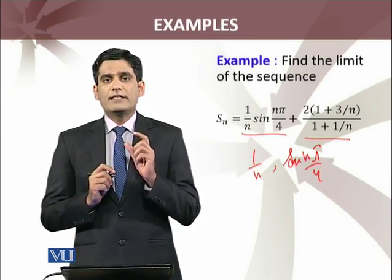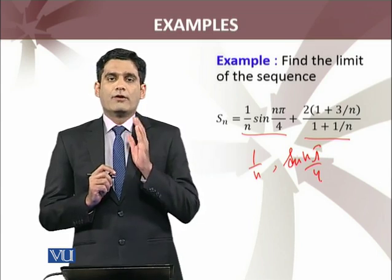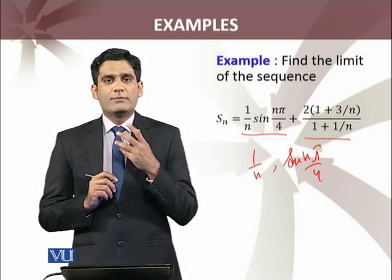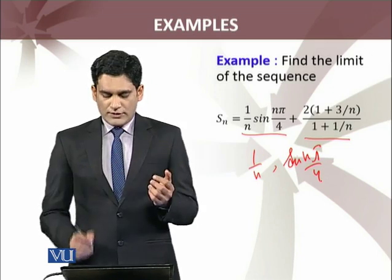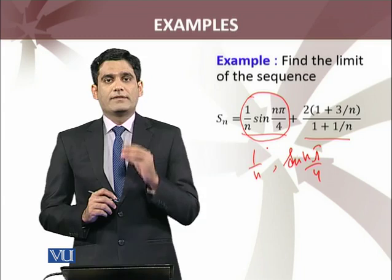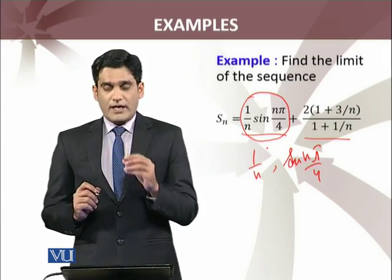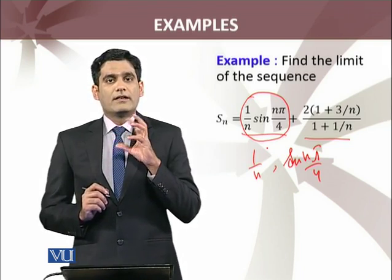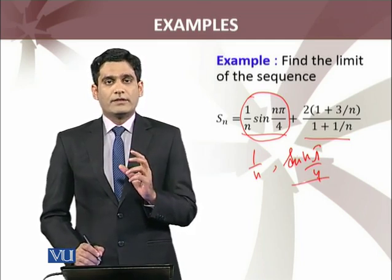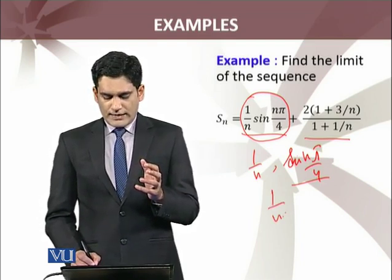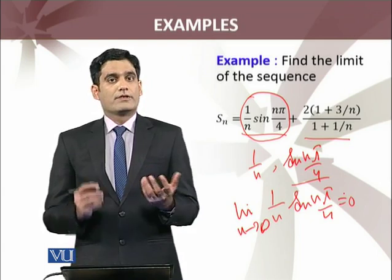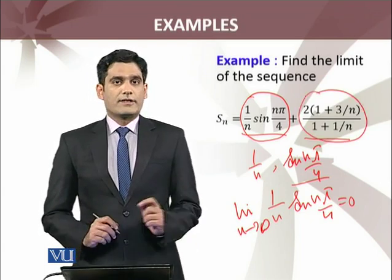The sequence 1/n — its limit I already know. When n approaches infinity, 1/n approaches 0, so the limit of the sequence 1/n is 0. Even if I don't know the limit of the second sequence, zero times something is 0. So taking the limit as n approaches infinity, the term consisting of (1/n)·sin(nπ/4), as a product of two sequences, has limit 0.